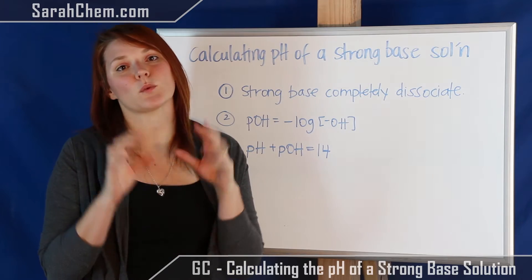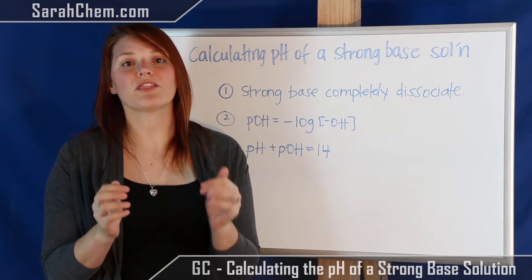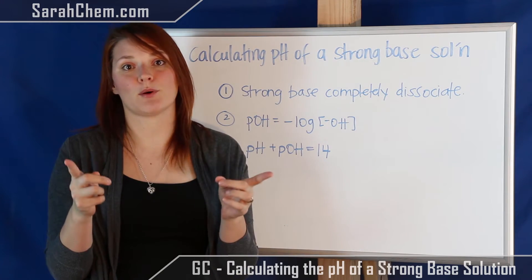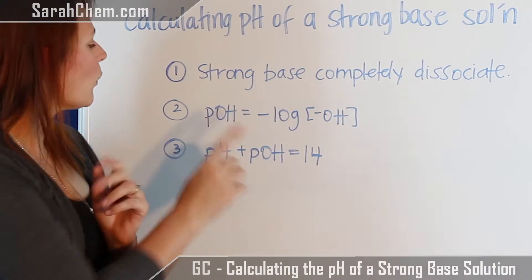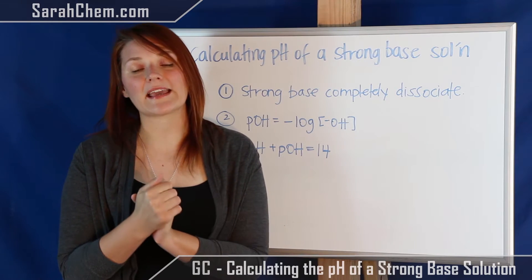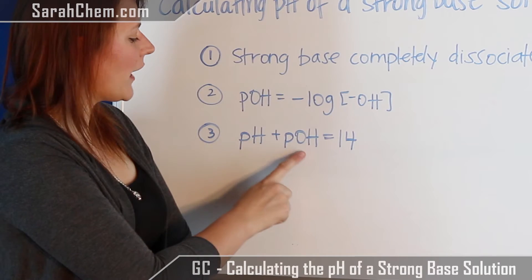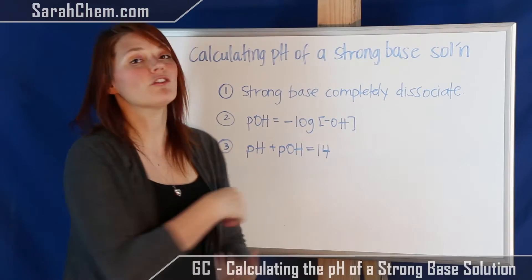The first one is that the strong base will completely dissociate. What that means is the whole amount that I put in will break apart into its component pieces. The second one is that the pOH is equal to the negative log of the hydroxide concentration. The third piece is that when you add your pH and your pOH you'll get a value of 14.